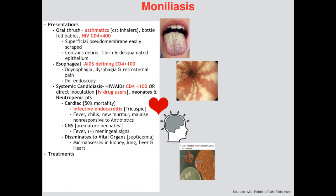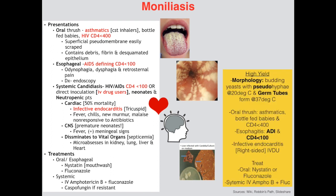For treatments: oral and esophageal can be treated with nystatin mouthwash — remember nystatin is never IV, so swish and spit — or fluconazole orally. Systemically, IV amphotericin B with or without flucytosine, and caspofungin can be used if the patient is non-responsive. High-yield points: morphology is budding yeast with pseudohyphae at 20 degrees, and it forms germ tubes at 37 degrees. The three pathologies are oral thrush for asthmatics, bottle-fed babies, and CD4 below 400; esophagitis which is an AIDS-defining illness; and infective endocarditis in an IV drug user. Treatments: nystatin swish and spit, fluconazole by mouth, and IV amphotericin B or caspofungin for systemic forms.